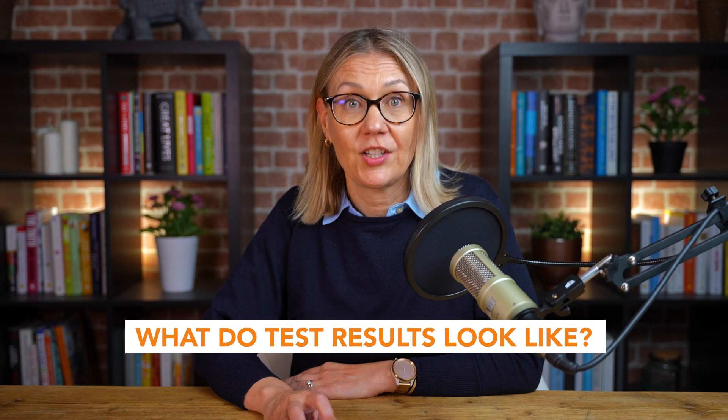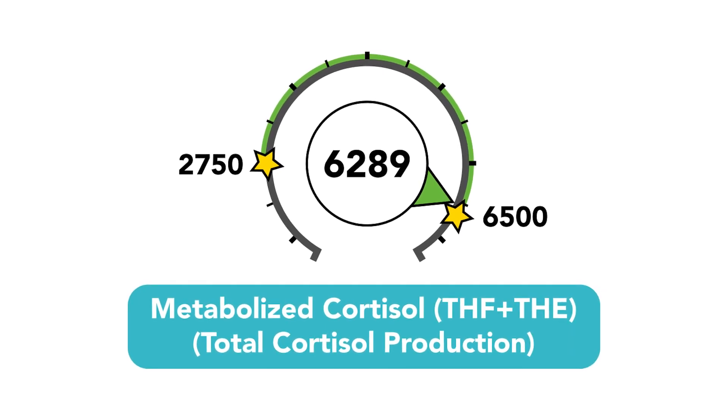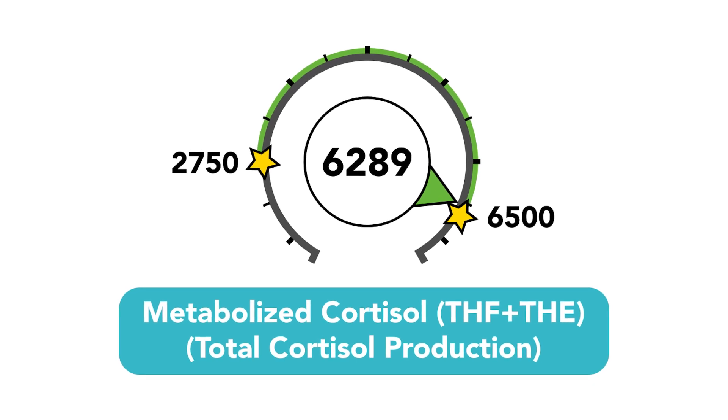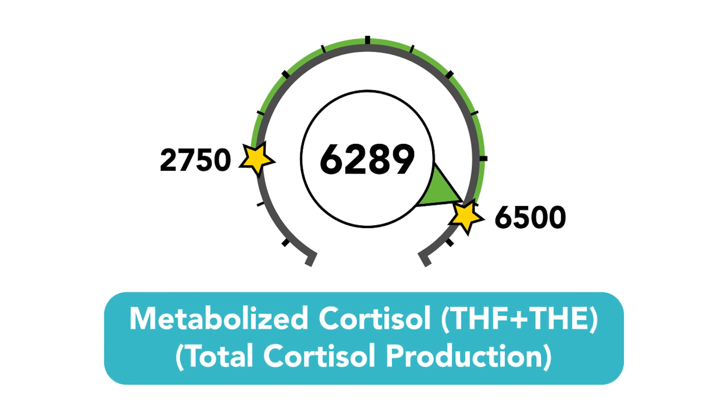Here's a section from one set of results. This has been measured from the urine samples and it gives us an idea of the amount of cortisol the adrenal glands are capable of producing for the day. Metabolized cortisol represents about 80% of the total cortisol production, so it's a really good measure of the fuel in the tank you have for the day. The optimal level should fall somewhere between the two stars that you can see. In this case, there seems to be quite a lot of fuel in the tank, actually bordering on a little bit too much.